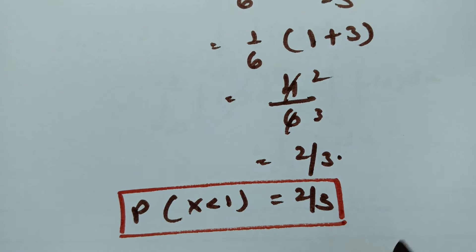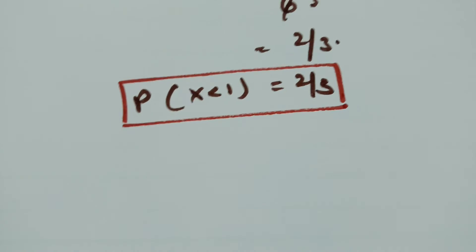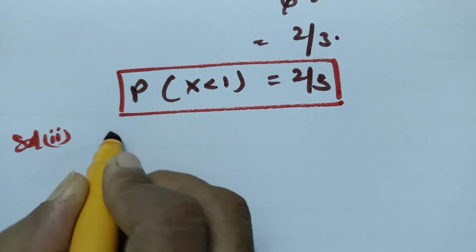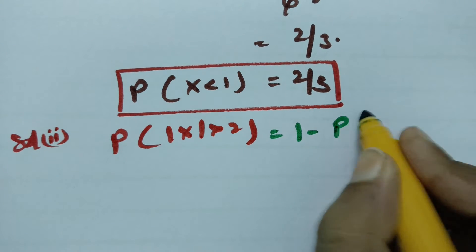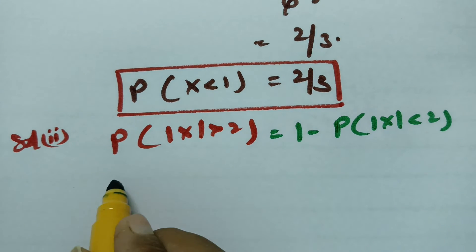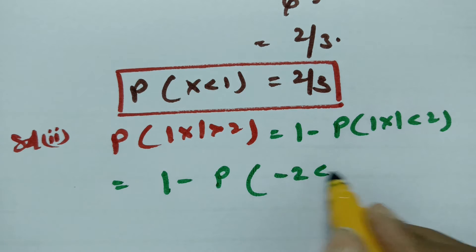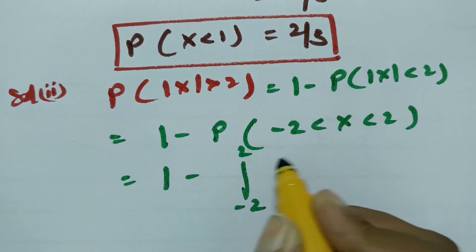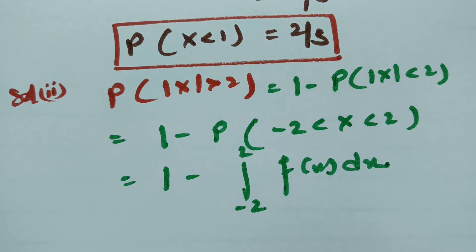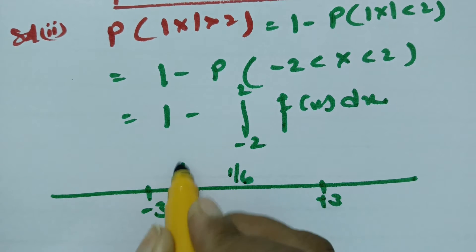Solution 2: find the probability of |X| greater than 2. We can write this as 1 minus P(|X| ≤ 2), which equals 1 minus P(-2 < x < 2). This becomes 1 minus the integral from -2 to +2 of f(x) dx. Between -3 and +3, f(x) = 1/6.